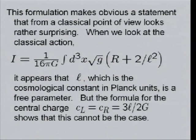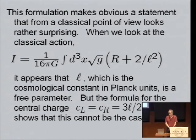Now, this formulation makes obvious some statements, but from a classical point of view, it looks rather surprising. When we look at the classical action, it appears that L, which is the cosmological constant, essentially, in Planck units, is a free parameter. But the formula for the central charge shows that this must be wrong.